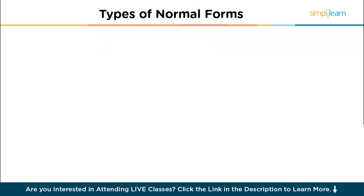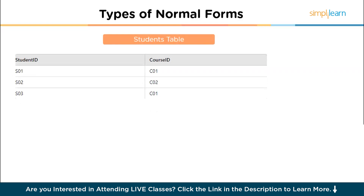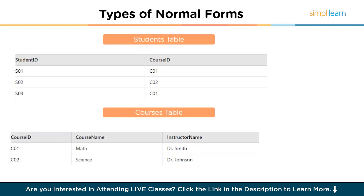To achieve 3NF, we split the table to remove the transitive dependency into a student-course table and a course table. In the student-course table, there are no non-key attributes depending on other non-key attributes. The course table stores the course and instructor information separately. This structure eliminates transitive dependency, ensuring the tables conform to 3NF.